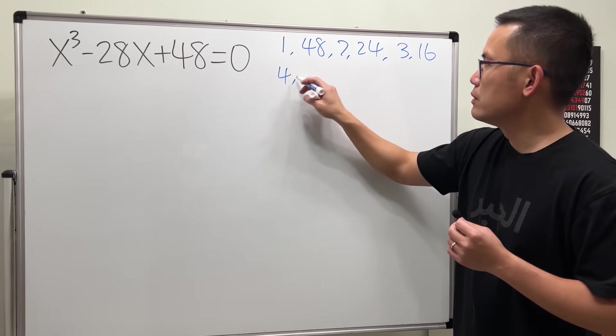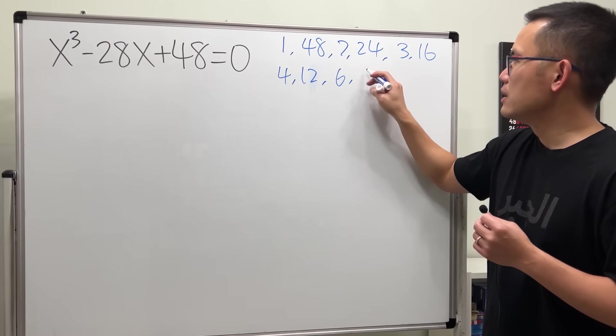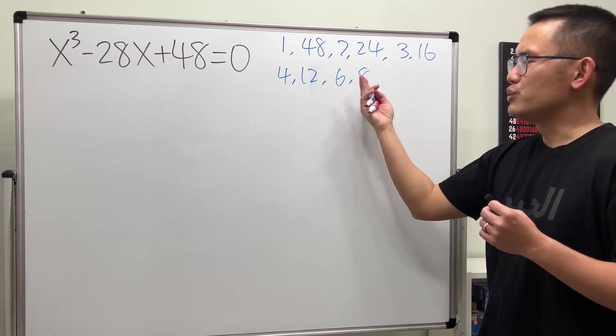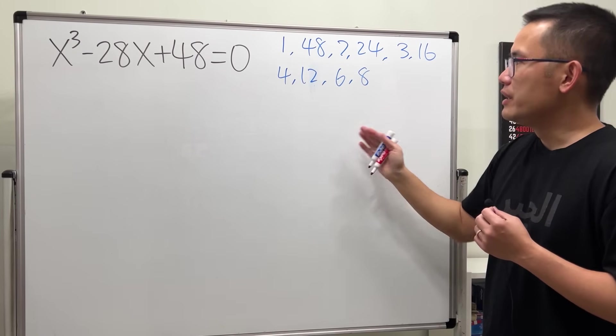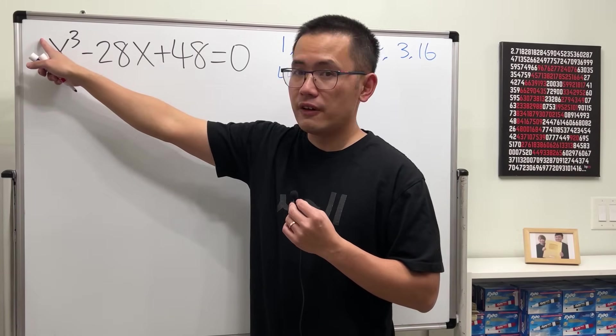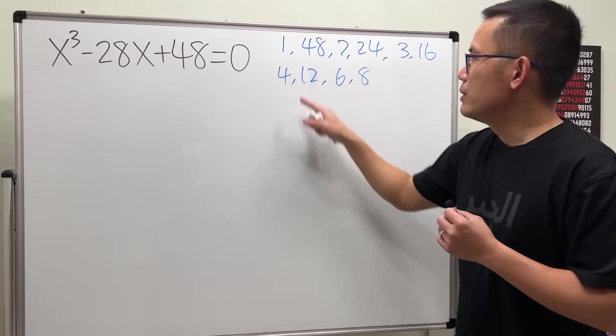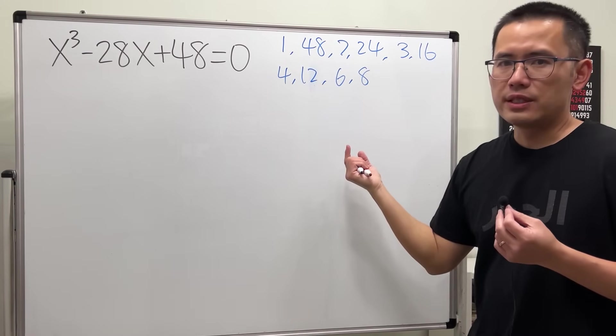Then we are going to pay attention to the coefficient of the leading term, which is the x cubed. It's a 1, so just divide everybody by 1, which doesn't really matter.